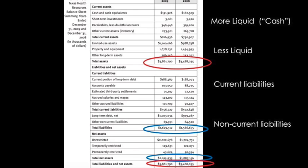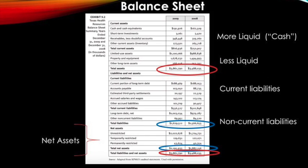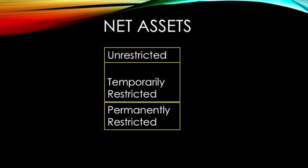Here you see a balance statement provided by Texas Health. It gives information on current liabilities, current assets, and net assets for two years: 2008 and 2009. As highlighted where it is circled, it shows the total assets, total liability, and total net assets. Total liability plus net assets equals total assets. On the asset side, cash and cash equivalents are listed at the top as more liquid, compared to inventory which takes more time to convert to cash. Net assets are divided into three categories: unrestricted, temporarily restricted, and permanently restricted.